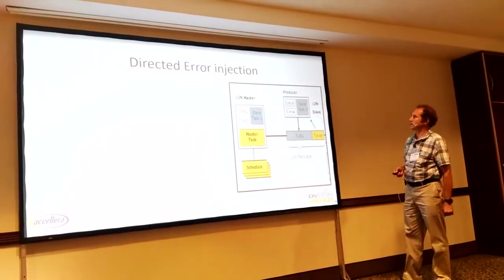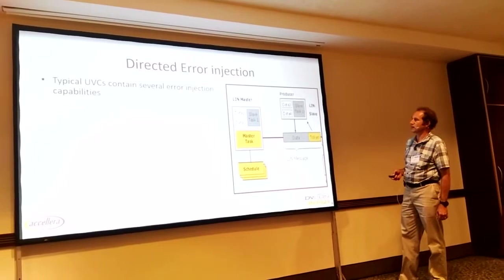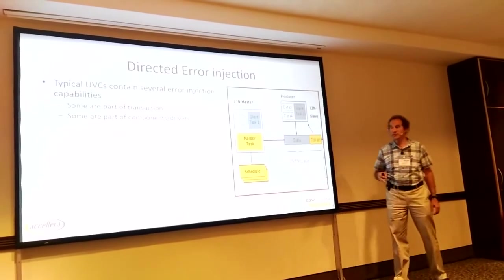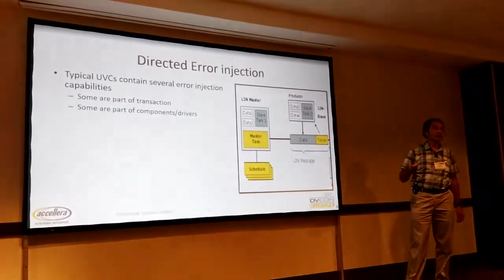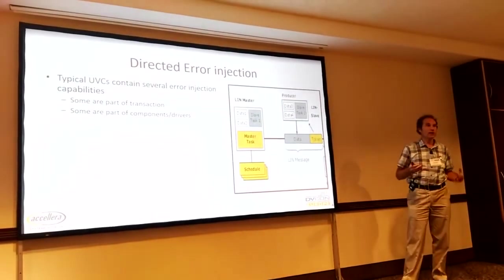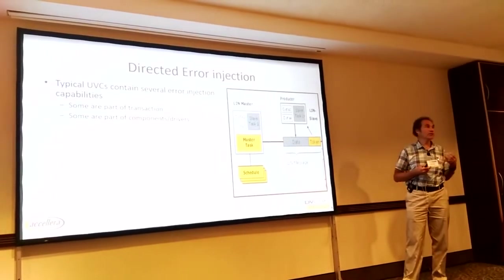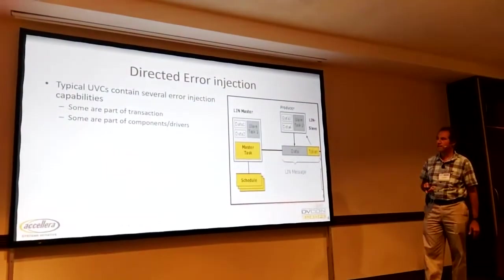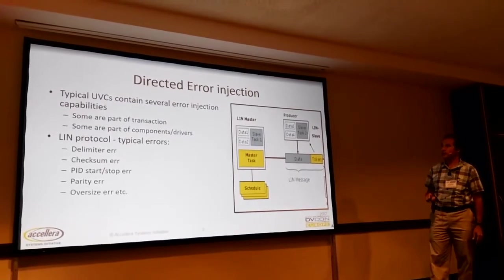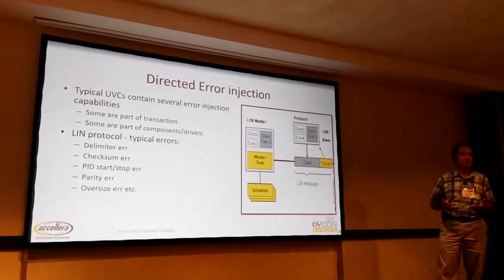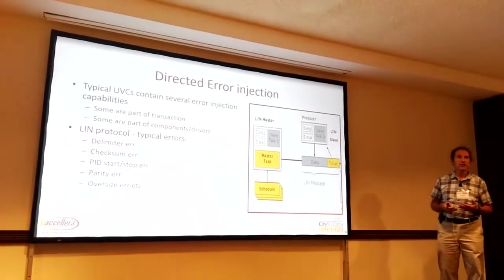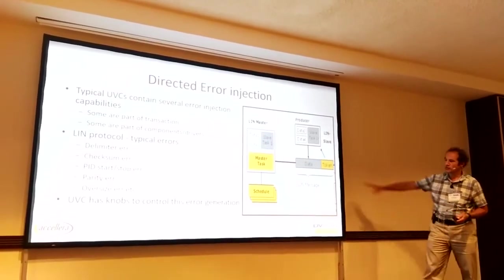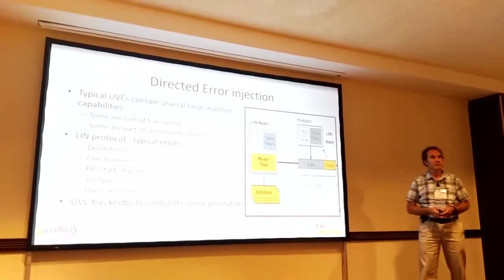Talking about directed error injection, we're looking at something like the LIN protocol. You have a serial bus communicating through the automotive system and you need the ability to inject errors. Some of those errors might be at the transaction level — you might want to accommodate an error inside the UVM transaction that you're creating, and some of those might be built into the different UVM components like the drivers. Typical errors in a serial protocol like LIN include limit errors, checksums, and different error types. We need to be able to inject those errors and show how the system reacts in those different cases, so the UVC should have knobs to help control this type of error generation.